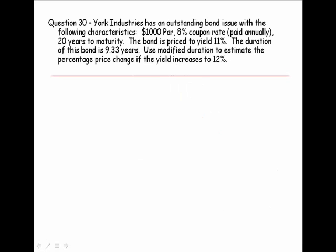York Industries has an outstanding bond issue with the following characteristics: $1,000 par, 8% coupon rate paid annually with 20 years to maturity. The bond is priced to yield 11%. The duration of this bond is 9.33 years. Use modified duration to estimate the percentage change if the yield increases to 12%.